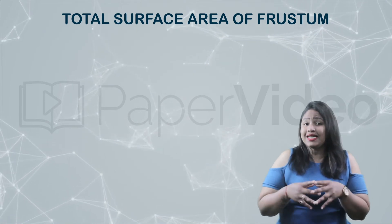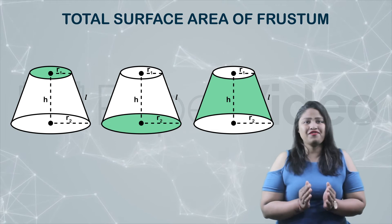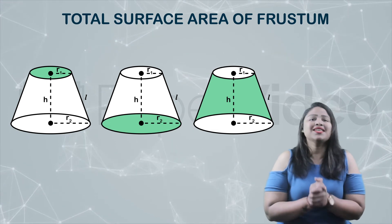What is the total surface area of a frustum of a cone? It is the combined area of the flat and curved surface of a frustum. A frustum has three surfaces: